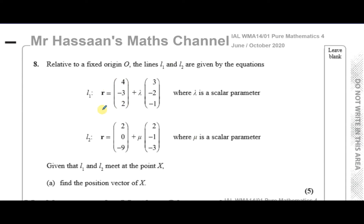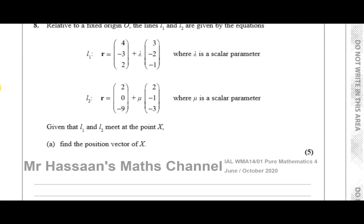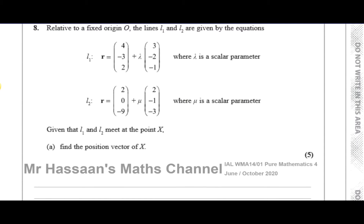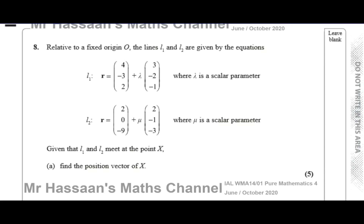So this is a vector equation of these two straight lines. They will intersect when they both give us the same point. We've got to find a value of lambda and a value of mu at which they intersect. We know that they definitely do intersect because the question tells us that they do.